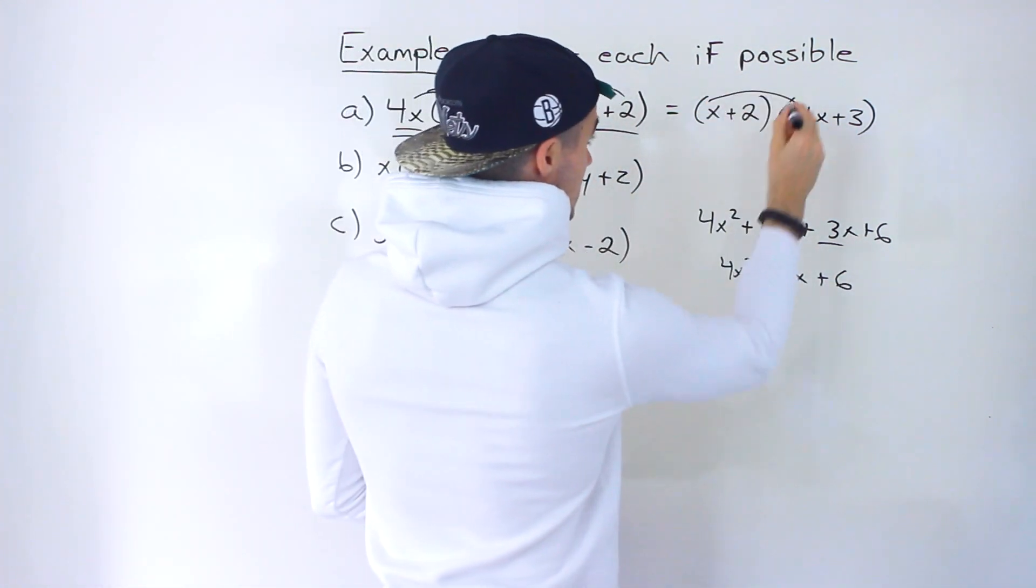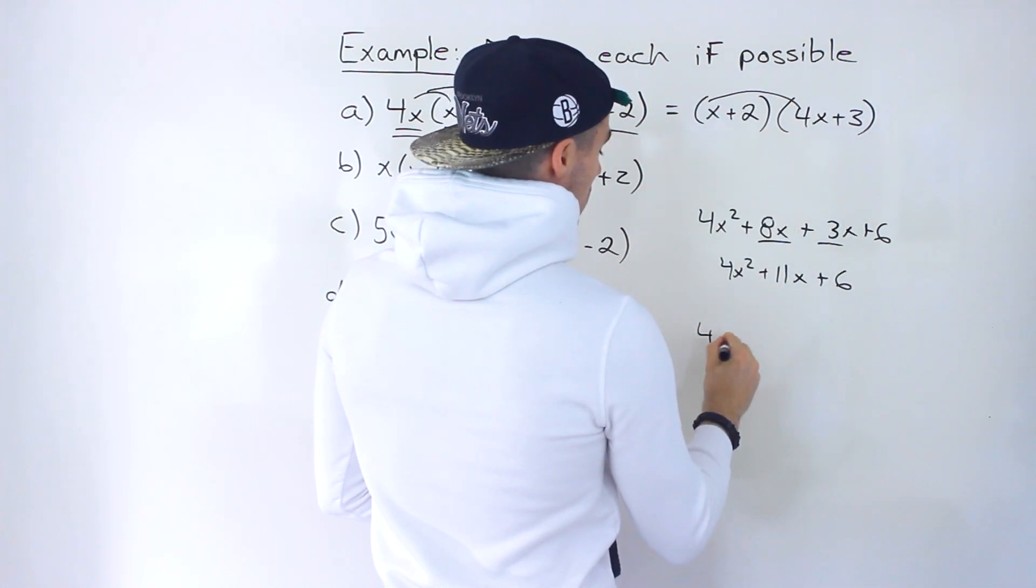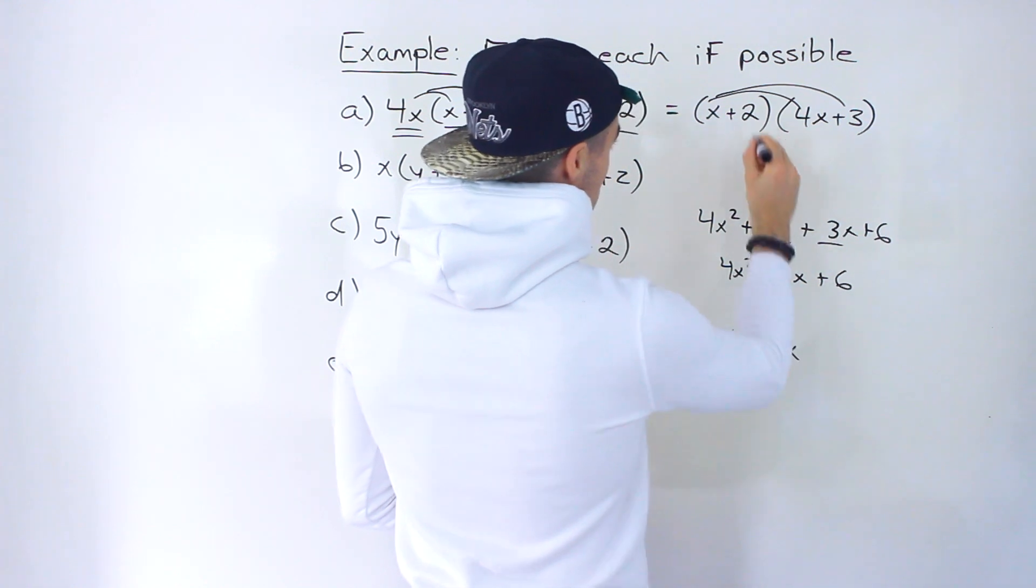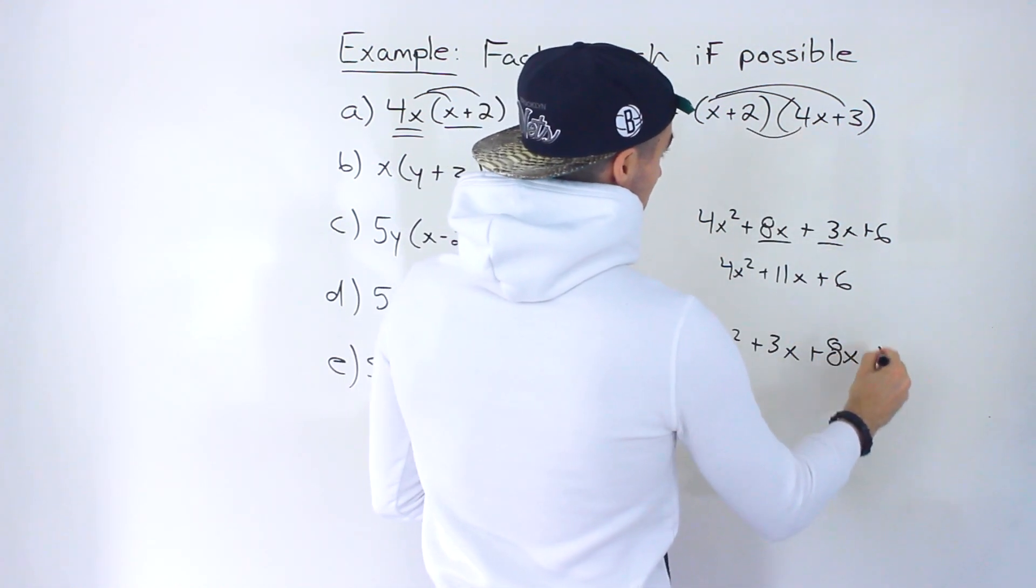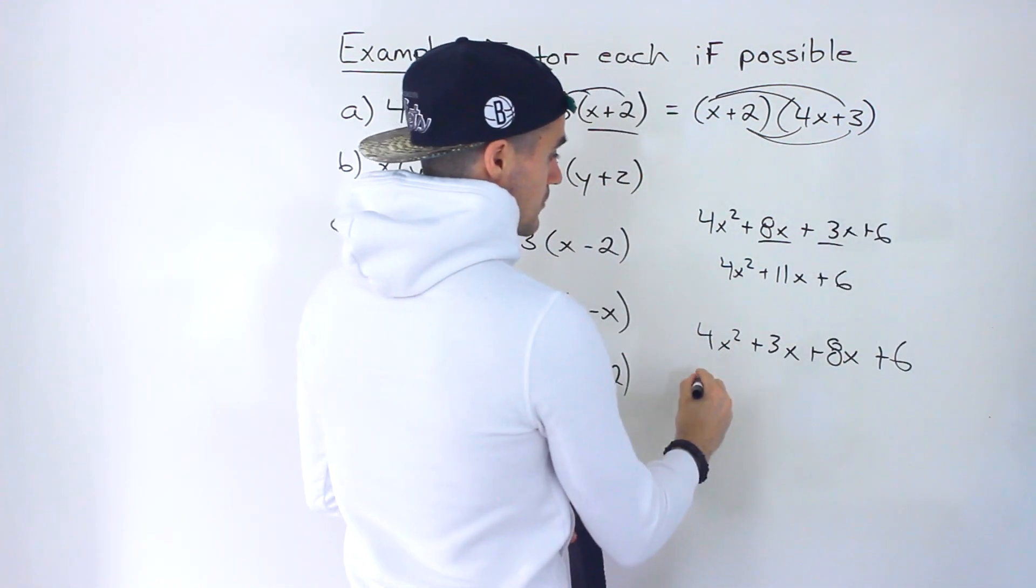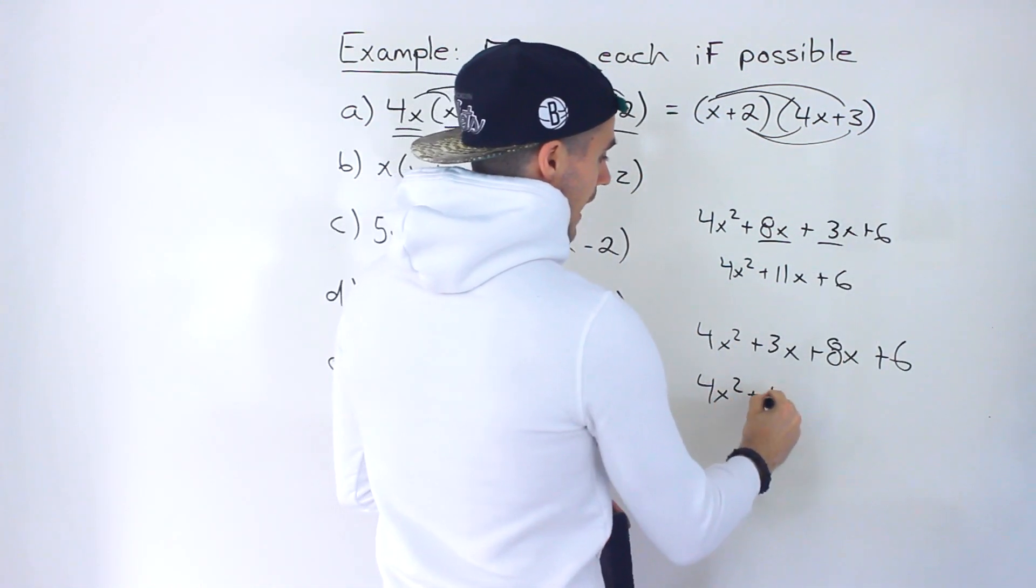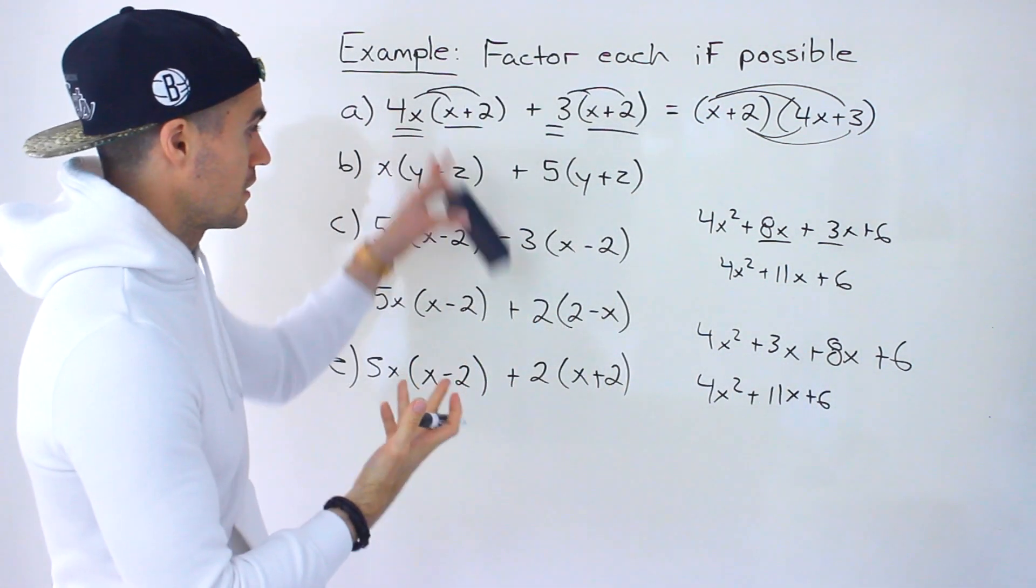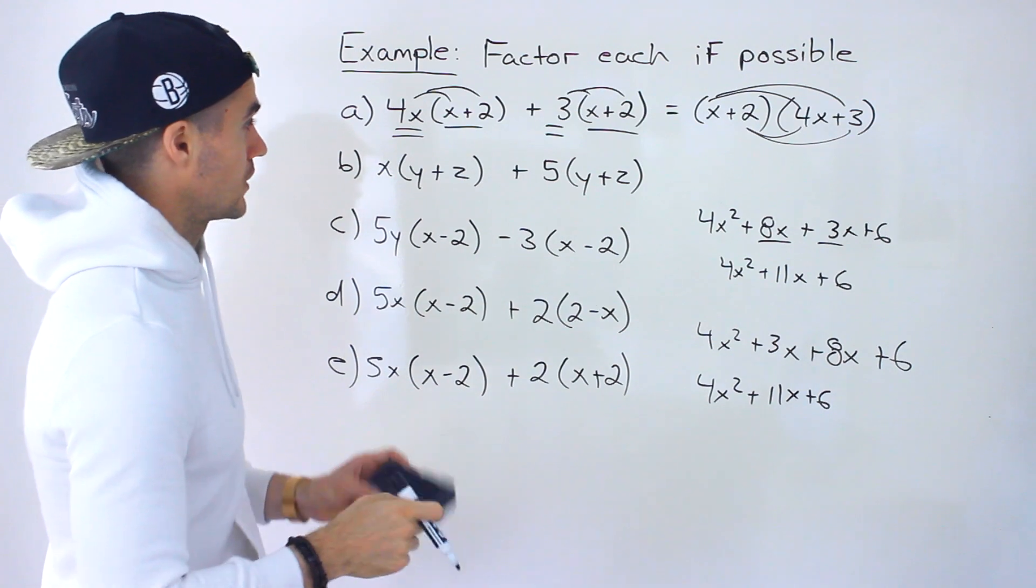Notice these are like terms. So we'd end up with 4x squared plus 11x plus 6 if we expand this side. Now notice what would happen if we expand these. We'd have 4x squared plus 3x plus 8x plus 6. So notice we get the exact same thing. So it's kind of cool how that works out. So both of them end up being the same, and they would be for all of these over here.